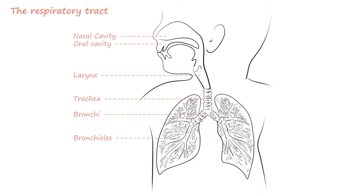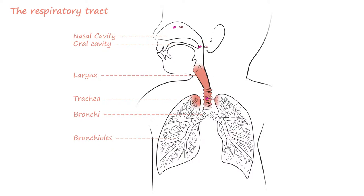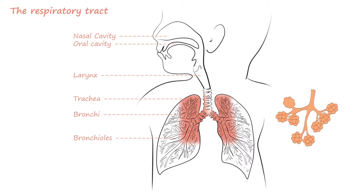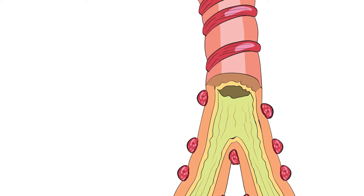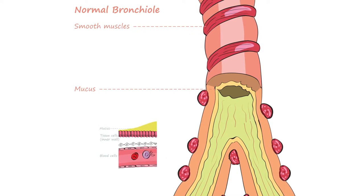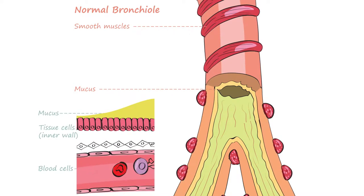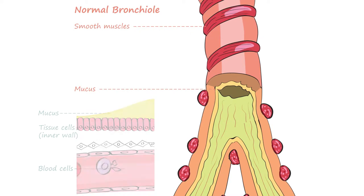The respiratory tract begins with the nasal cavity and oral cavity. Oxygen inhaled travels through the upper respiratory tract and then down the lower respiratory tract, which begins with the larynx, continuing to the trachea, which bifurcates into the bronchi, then smaller bronchi, then bronchioles, before terminating as an alveolus. A normal bronchiole has smooth muscle cells around it which help in contraction, and the inside is lined by mucus produced by goblet cells.